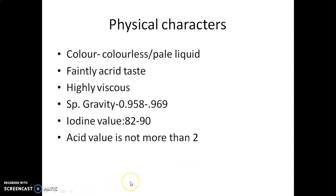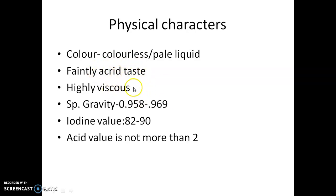Let's see the physical characteristics of castor oil, as this is an unorganized drug. Color is colorless or sometimes pale yellow liquid. Odor is generally odorless. Taste is faintly acrid. It is a highly viscous oil. Specific gravity is 0.958 to 0.969. Iodine value is 82 to 90. These are the standardization parameters of original castor oil.